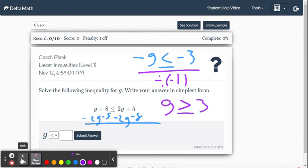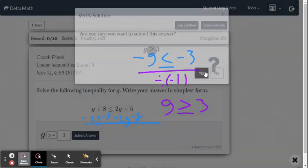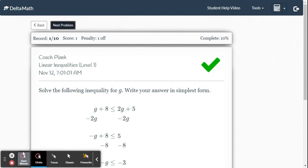So now in Delta Math, we come down here and we're going to change our sign to the greater than or equal to sign, and we put our answer in 3. And we see if we are correct. And that's all there is to it.